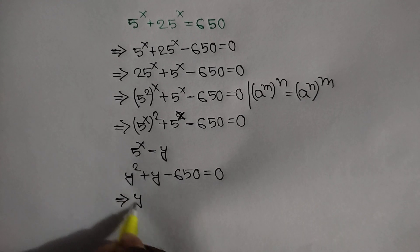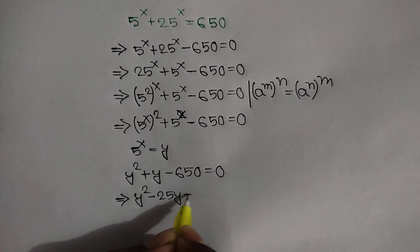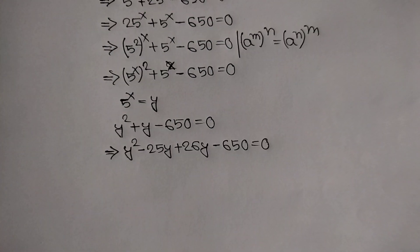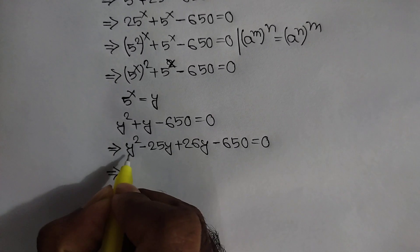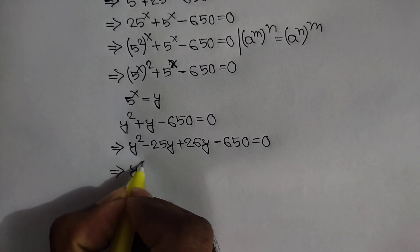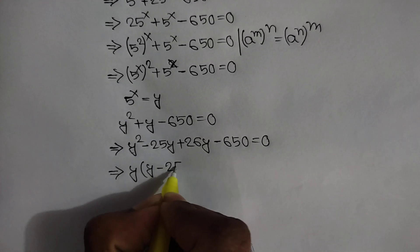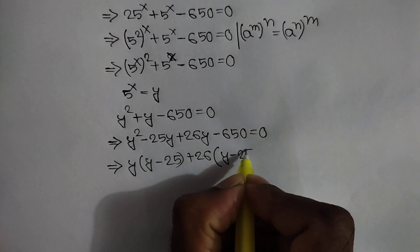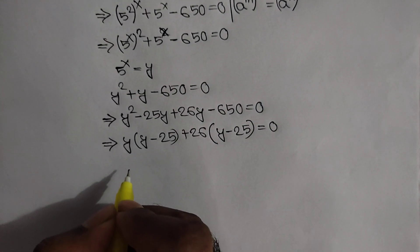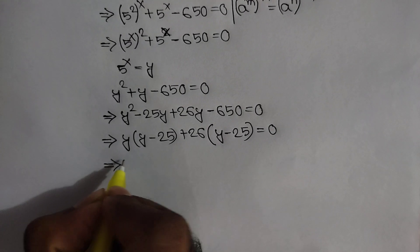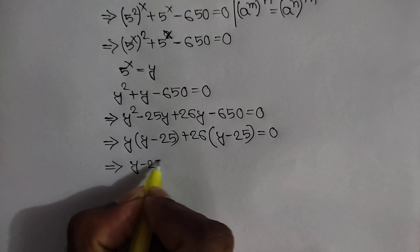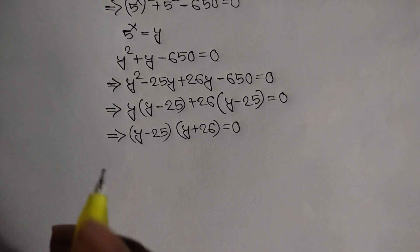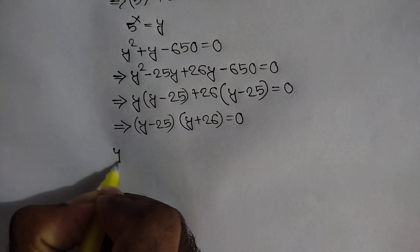So we can write y squared minus 25y plus 26y minus 650 is equal to 0. Taking y common from the first two terms and 26 common from the last two terms, we can write y(y minus 25) plus 26(y minus 25) is equal to 0.